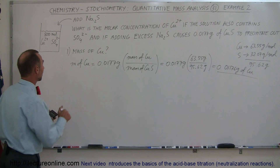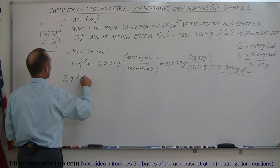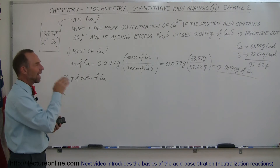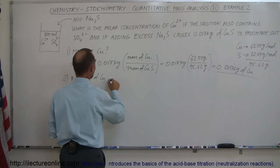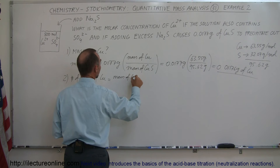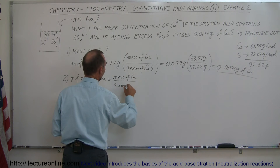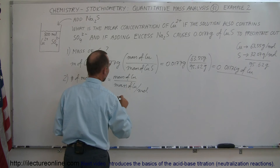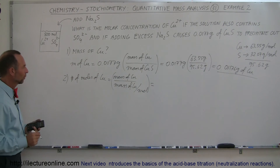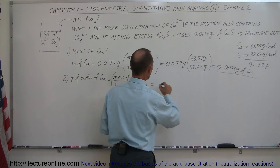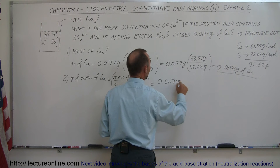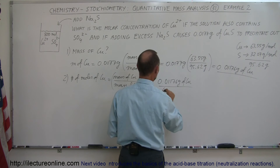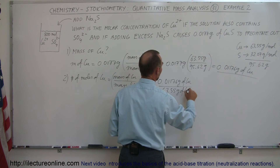Now we know how much copper we had in our precipitate. Step two is finding the number of moles of copper. We take the mass of copper and divide it by the mass per mole. So the number of moles equals the mass of copper divided by the mass per mole of copper. We have 0.01176 grams of copper divided by the molar mass of copper, which is 63.55 grams of copper per mole.